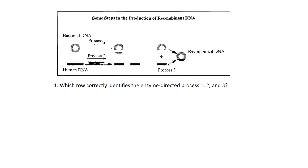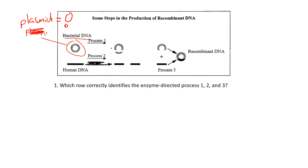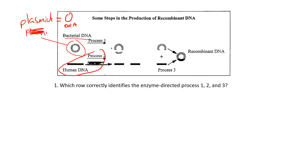Looking at the diagram here, they have a couple of processes shown. Process one is with bacterial DNA, and you can see that it's circular DNA — that circular DNA is called a plasmid. Process one also shows linear DNA from a human. Human DNA is not circular like a bacterial plasmid; it's linear, and within it we have all sorts of genes.